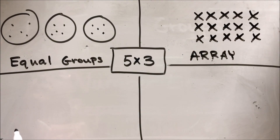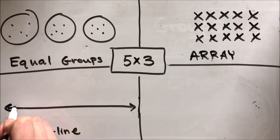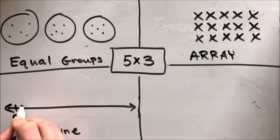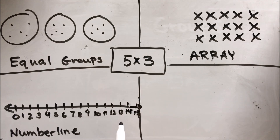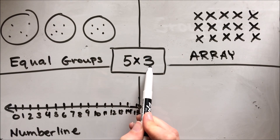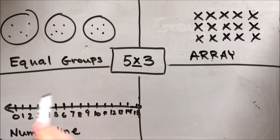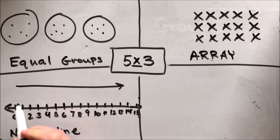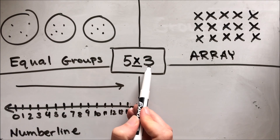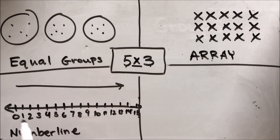Next, I'm going to show this multiplication fact using a number line. With a number line, don't forget that you need to start at zero. I either need three hops of five or five hops of three. And when we're multiplying, don't forget that our number line hops this way — not this way. That's division.